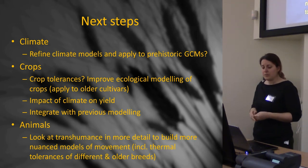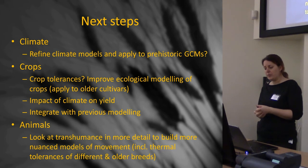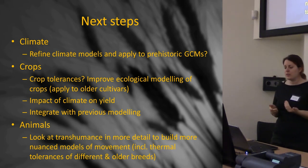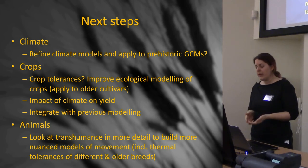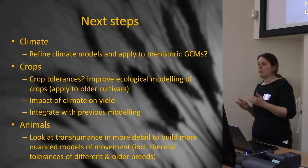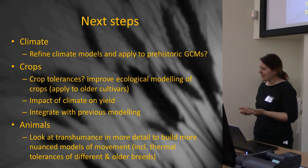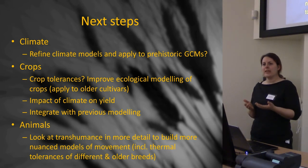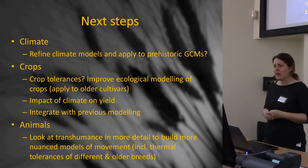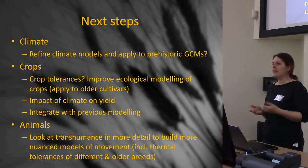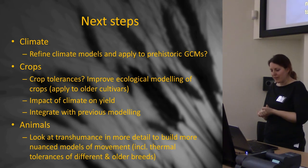In terms of the animals, I'd love to look at transhumance in more detail, see if I can apply it to different types of areas and build more nuanced models of movement. In the same way that I'm using modern crops, I'm using modern animals here — which is great as a quick index, but obviously even between modern sheep breeds there's going to be a lot of difference in hardiness. So there's a lot of work I need to look at — older breeds, hairier breeds, wherever I end up going.